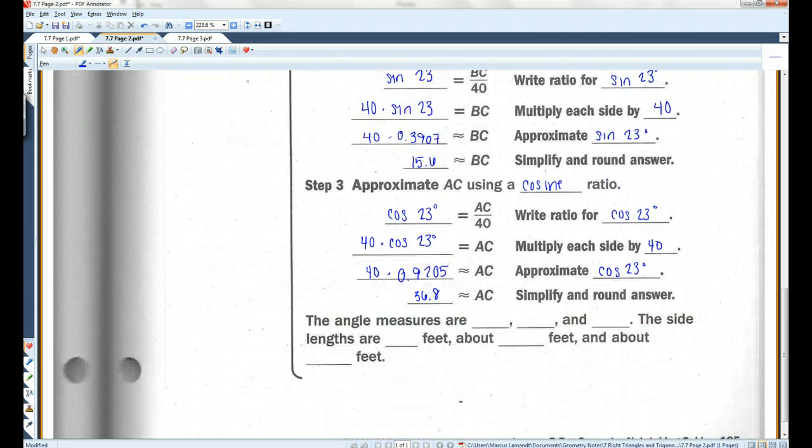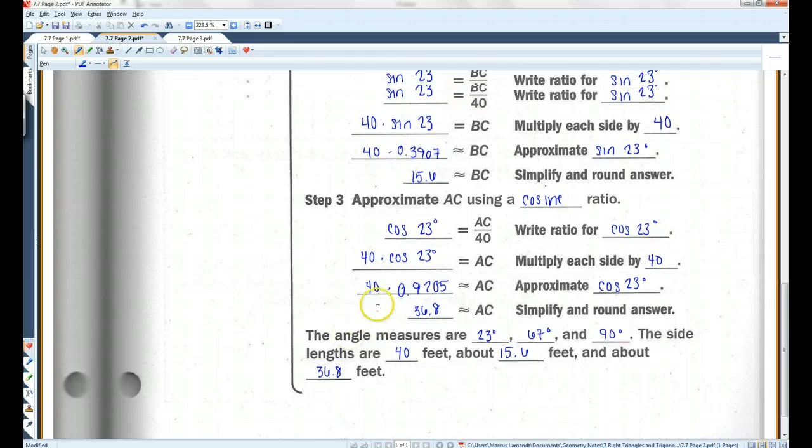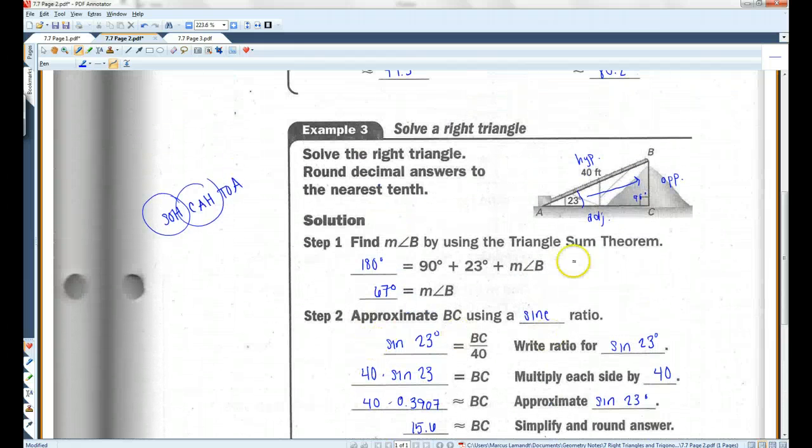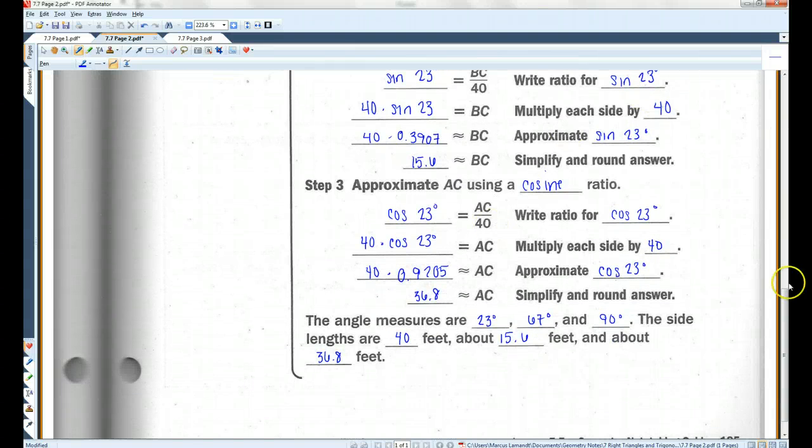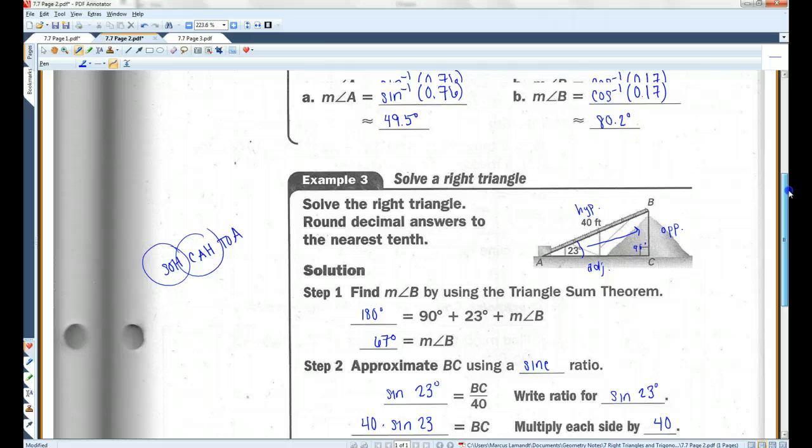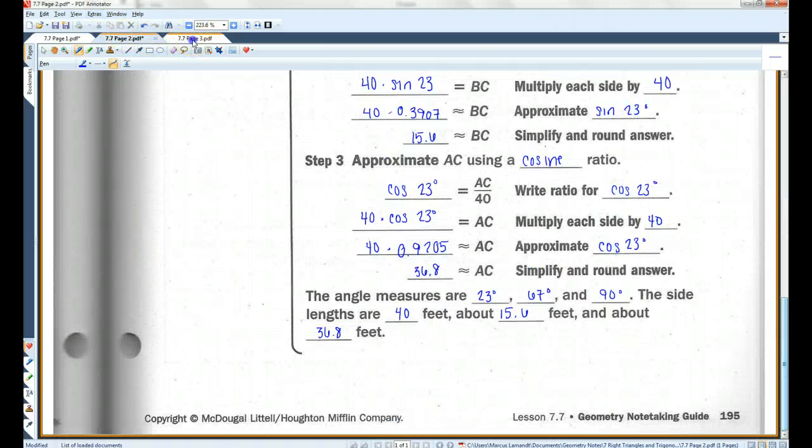So, the angle measures are 23 degrees, 67 degrees, and 90 degrees. The side lengths are 40 feet, about 15.6 feet, and about 36.8 feet. We have solved for all three angles and all three sides. So, we have solved the triangle. These problems where you are solving a right triangle, they are going to be longer problems. Multi-step longer problems. So, just a heads up.